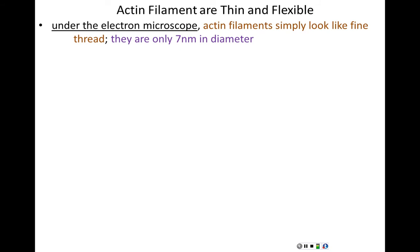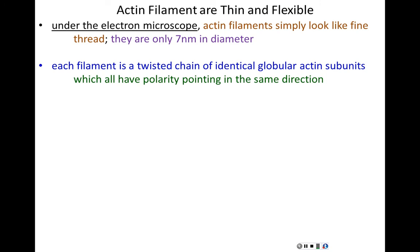Let's talk more about the properties of actin filaments. Using an electron microscope, you can visualize actin filaments — they look like very thin thread, only seven nanometers in diameter. Each individual filament of actin is actually a twisted chain of identical globular actin subunits which have come together to create a protofilament-type structure, very similar to microtubules.